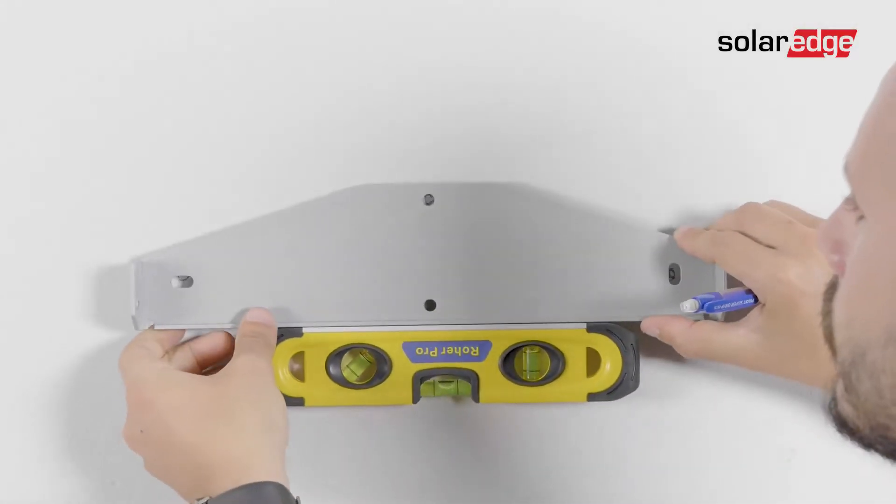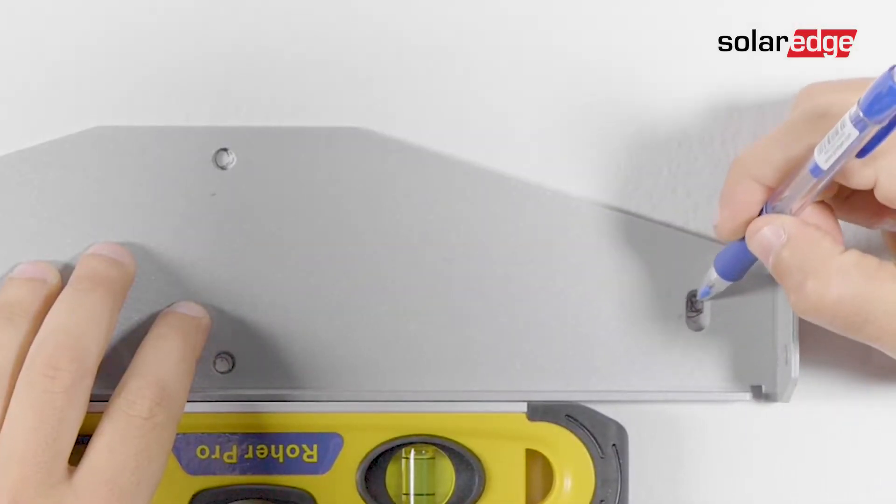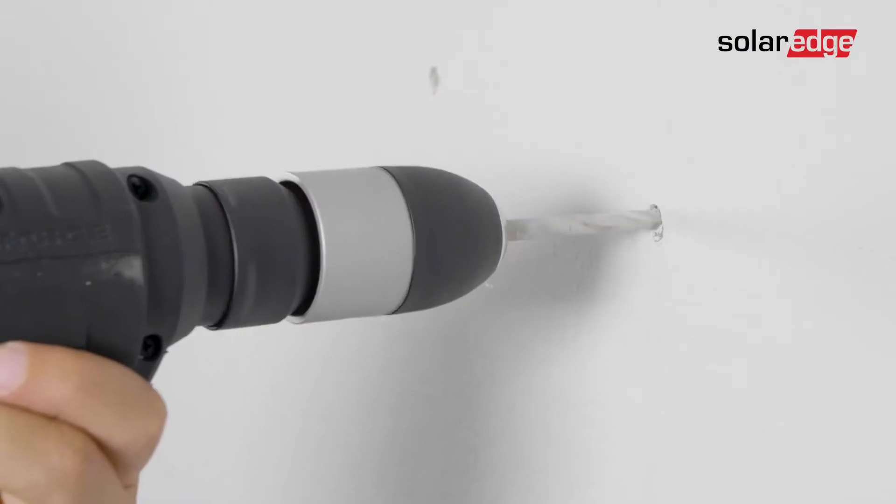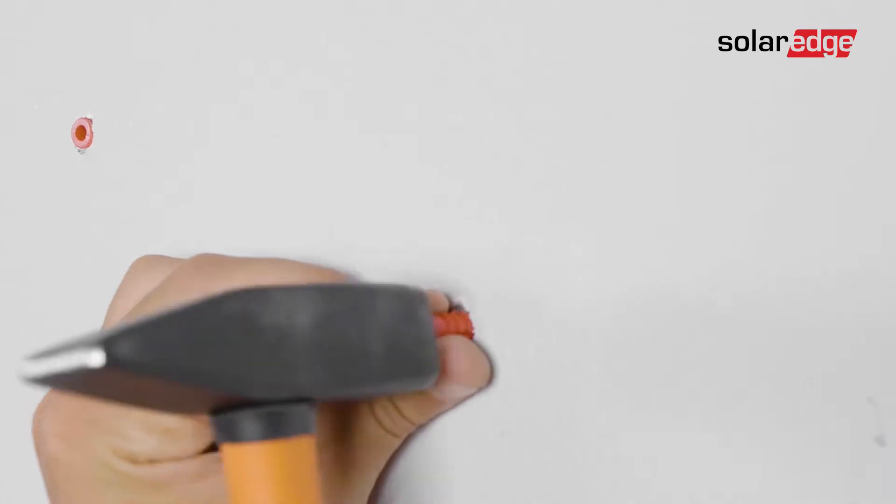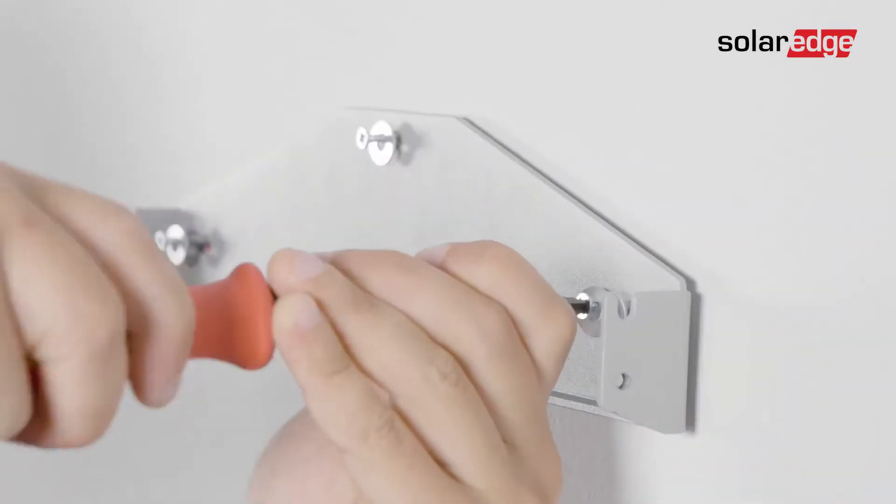We start by mounting the inverter. Position the mounting bracket against the wall and mark the drilling hole locations. Drill the holes and mount the bracket. Fasten the bracket using a standard bolt and verify that the bracket is firmly attached to the mounting surface.